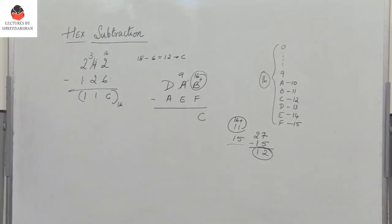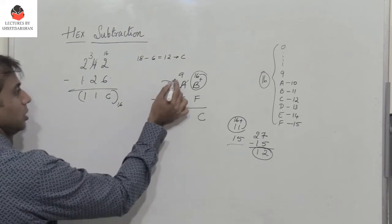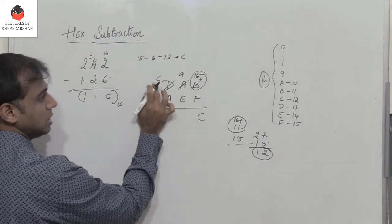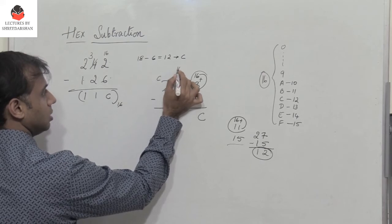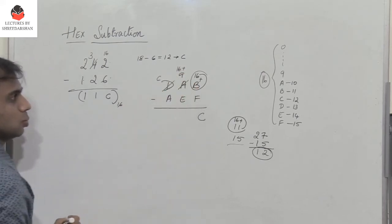Now you have 9. I cannot subtract E, which is 14, from 9. So what do I do? I borrow. When I borrow from D, it becomes C. And I have to add 16 to 9.